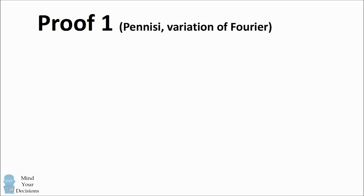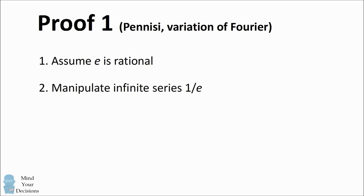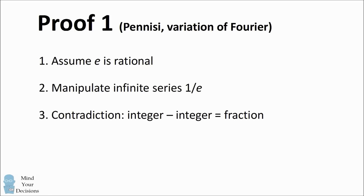The first proof is by contradiction. We'll assume that E is a rational number. Then we'll look at the infinite series for its reciprocal, 1 over E. This will lead to a contradiction that an integer minus an integer will equal a fraction, and so we can conclude E must be irrational.